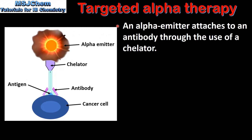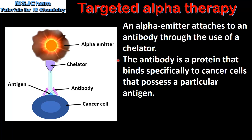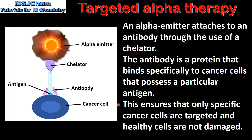In Targeted Alpha Therapy, an alpha emitter attaches to an antibody through the use of a chelator. The antibody is a protein that binds specifically to cancer cells that possess a particular antigen. This ensures that only specific cancer cells are targeted and healthy cells are not damaged.